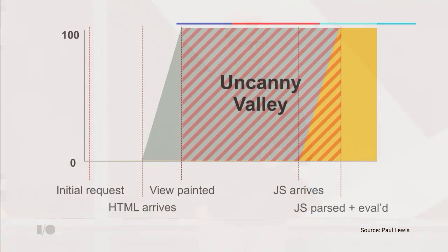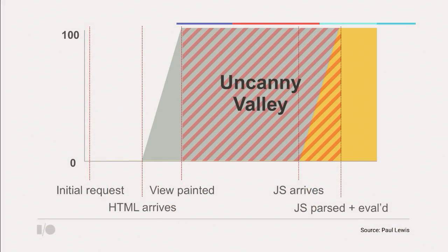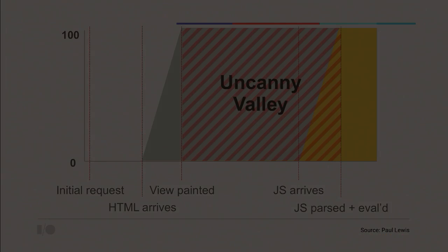More and more we're seeing the uncanny valley, which is where you have a server-side framework that takes application state, dehydrates it into some HTML that captures the current view state, re-inflates it on the client side, and then boots up all the JavaScript to finally make it interactive. This is super unsatisfying — particularly on low-power devices on flaky networks, like phones. What we're really after is interactivity.